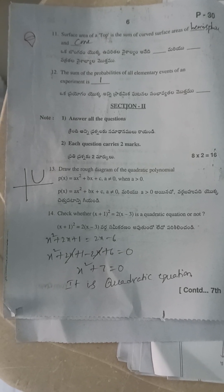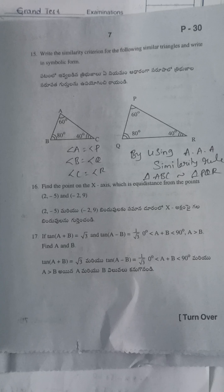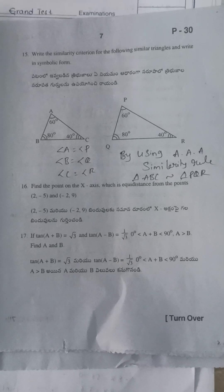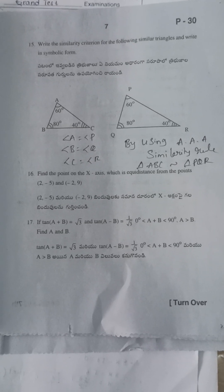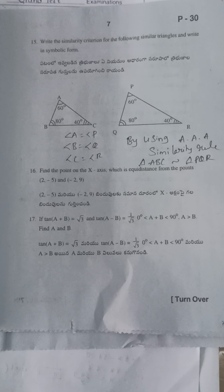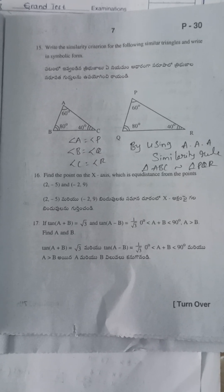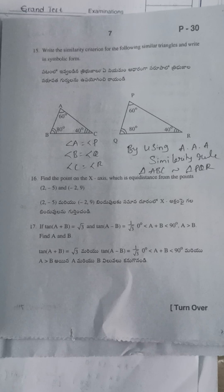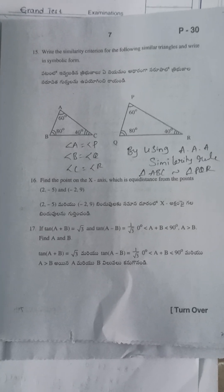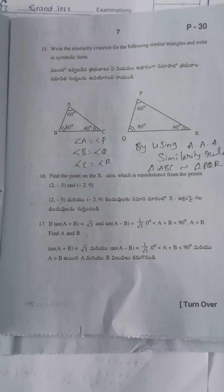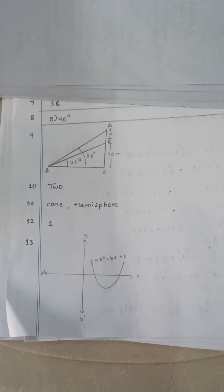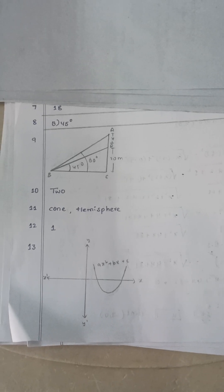Write the similarity criterion for the following triangles and write in symbolic form. Since angle A = angle P, angle B = angle Q, and angle C = angle R, by the Angle-Angle (AA) similarity criterion the two triangles are similar. The shape for the 13th question answer is a parabola — specifically an upward parabola.